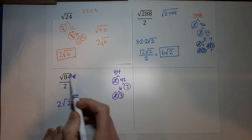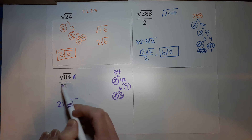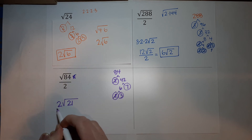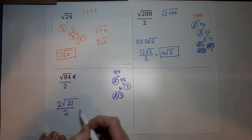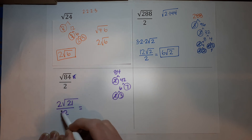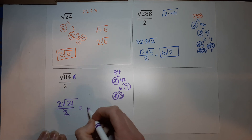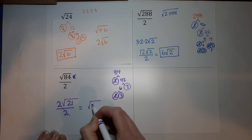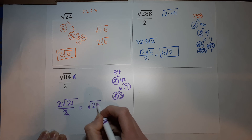Remember, we are still dividing this by 2. So 2 over 2 just gives me 1, and those cancel each other out. So I'm just left with the square root of 21.